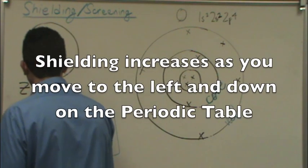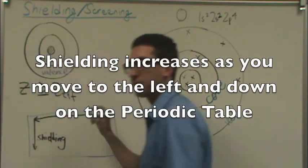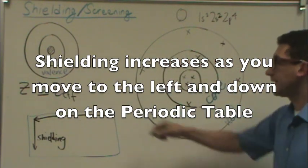What does that mean? As you go to the left, shielding increases on the periodic table. And then as you go down, shielding increases on the periodic table.